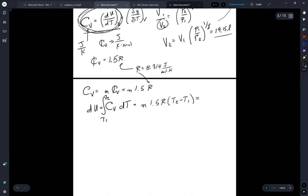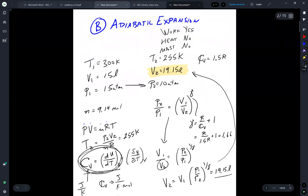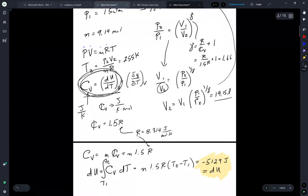Which gives us negative 5129 joule. Okay, so we've got the change in the internal energy. Oh, what are we missing? What are we missing here? We've got the change in internal energy, we've got the change in the volume, the change in the temperature. Work. Well, what do we have for work?